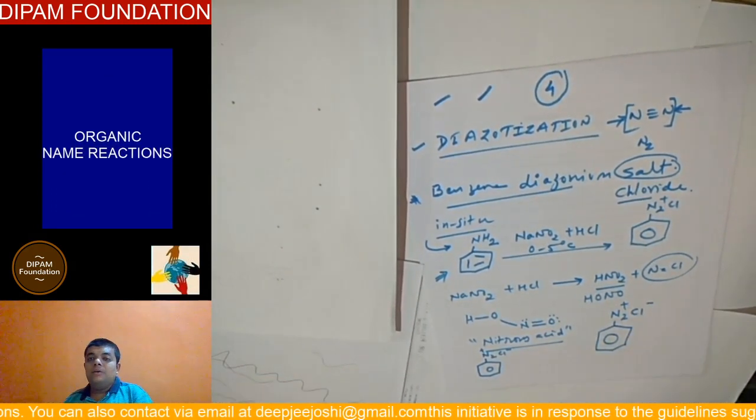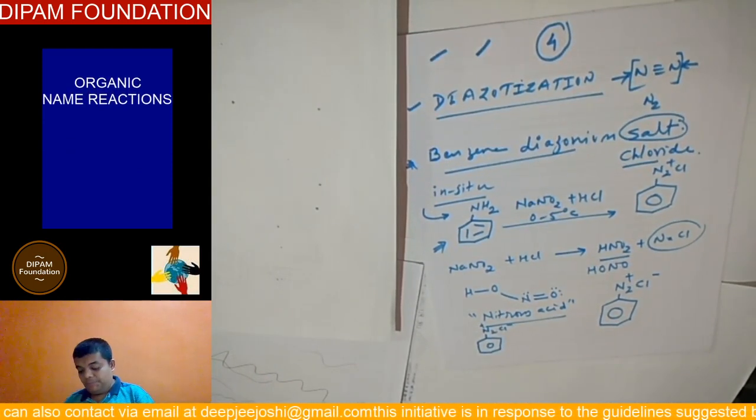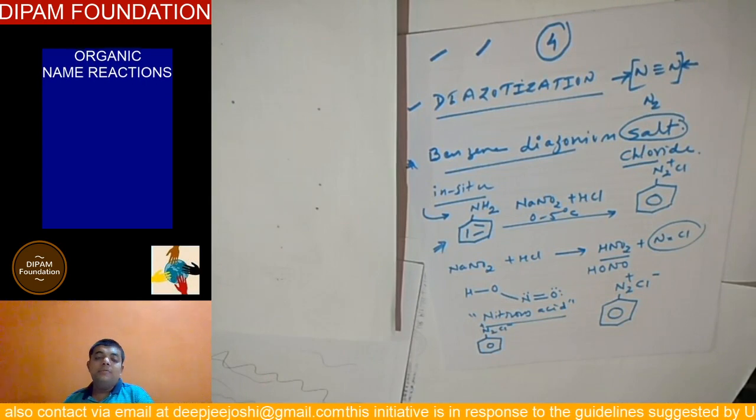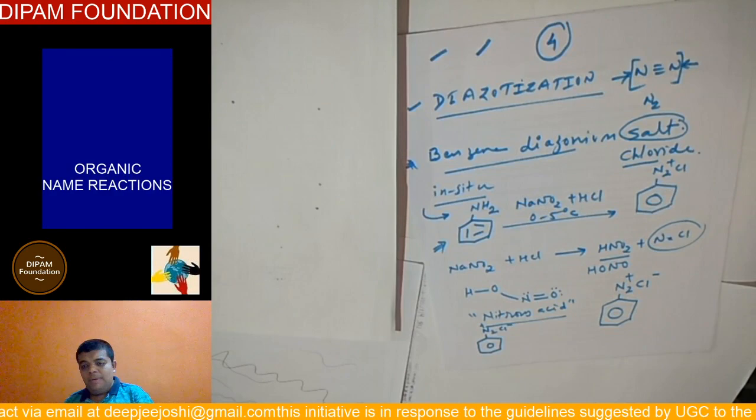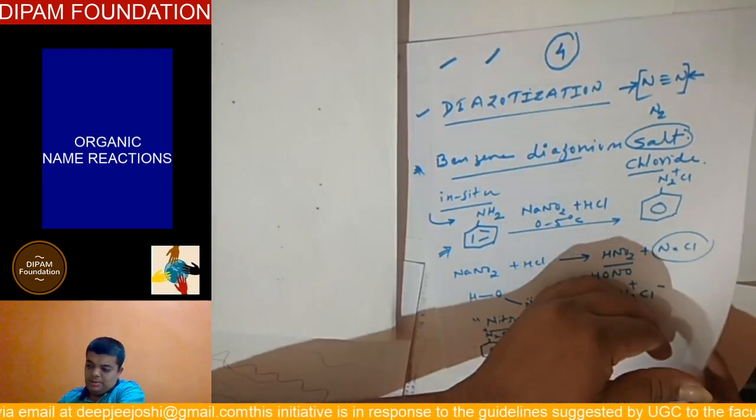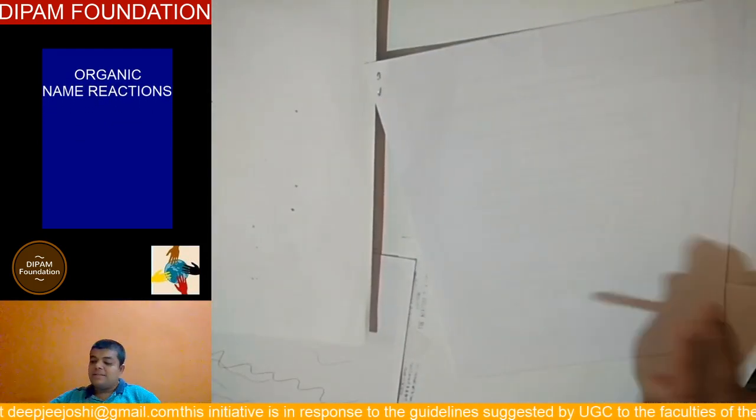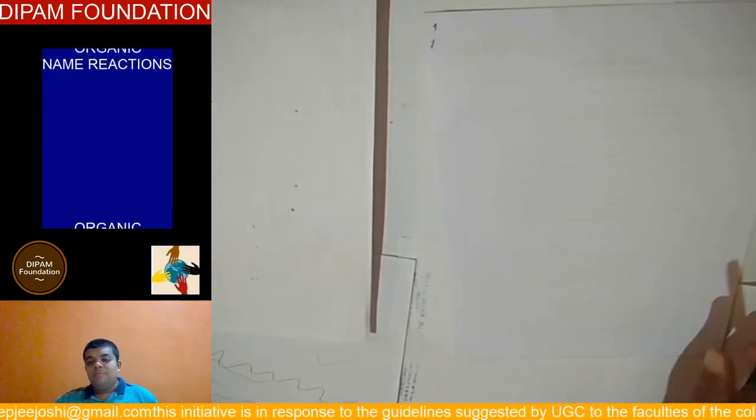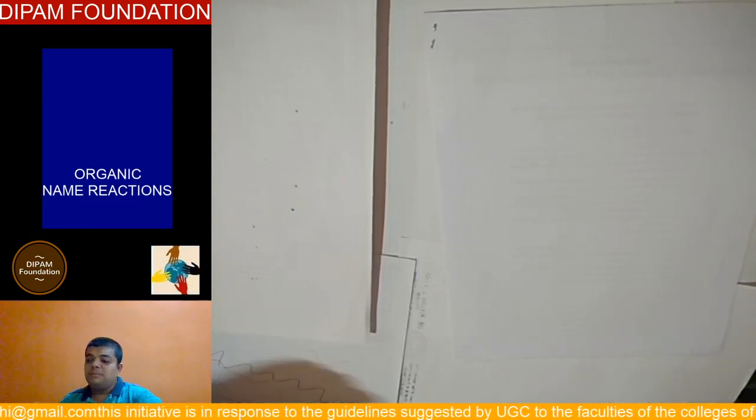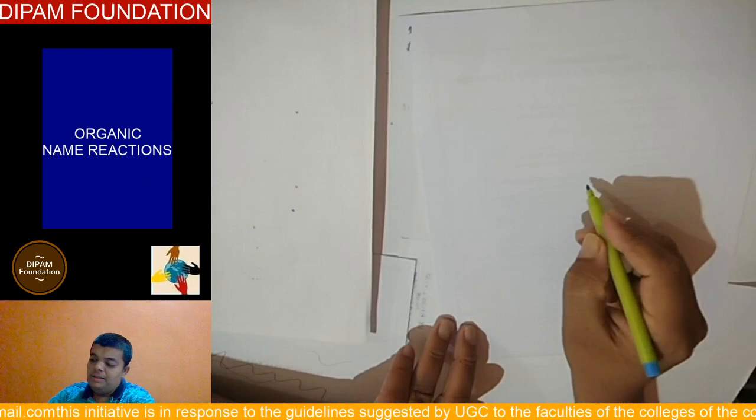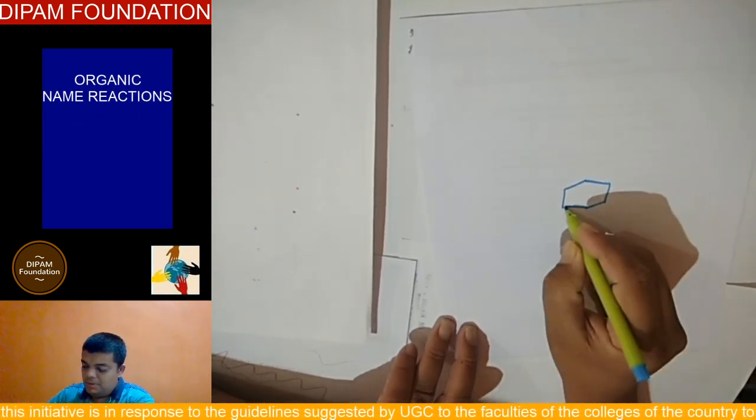Benzene diazonium chloride salt will further react to at least give you 6 products. I may while discussing cross this number 6 but as of now I am sure that it will minimum give me 6 products. So, I am writing that part in the centre.